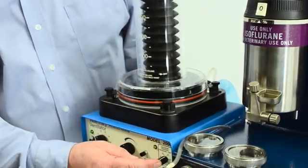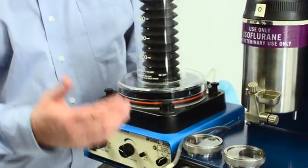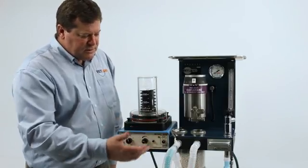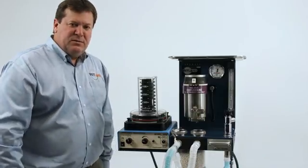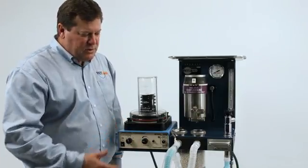This is our pressure alarm. So if we exceed pressure in the lungs this is where you would want to set it. Right now it's set at 40, we don't want to exceed 40 centimeters of water pressure otherwise it will alarm.